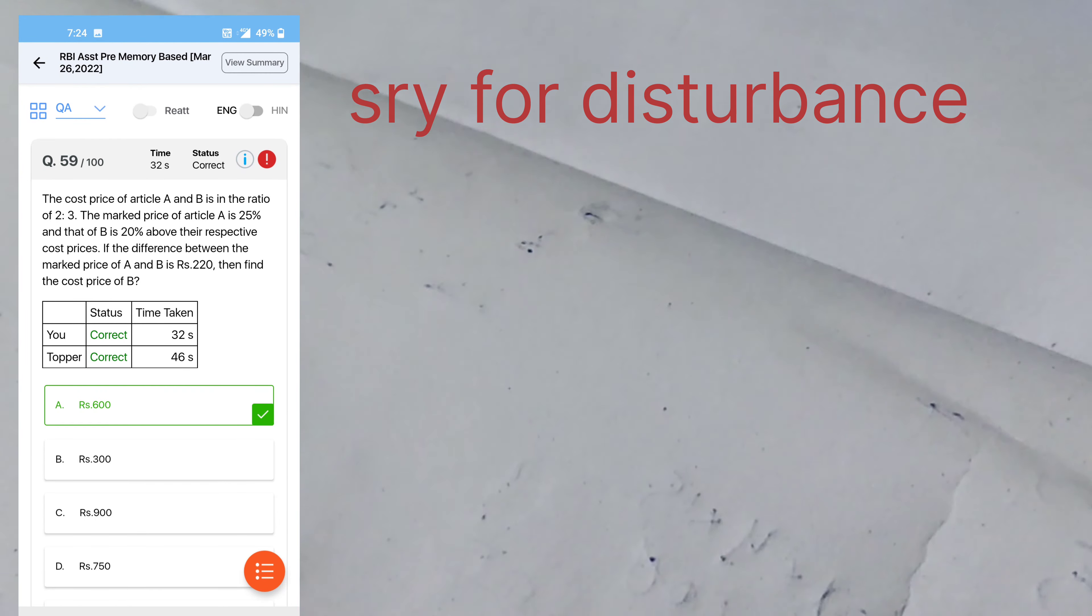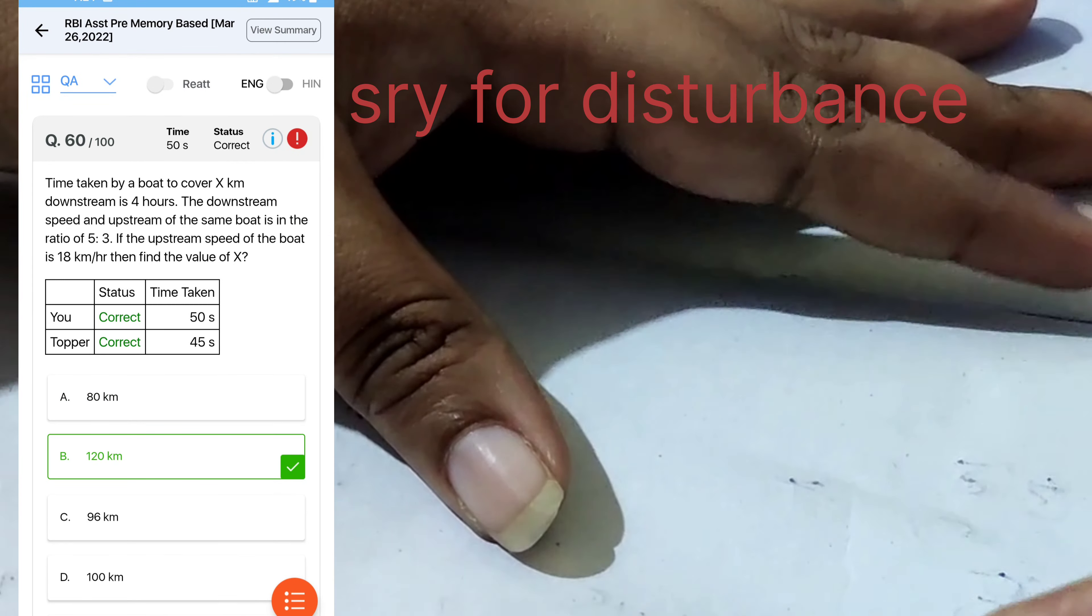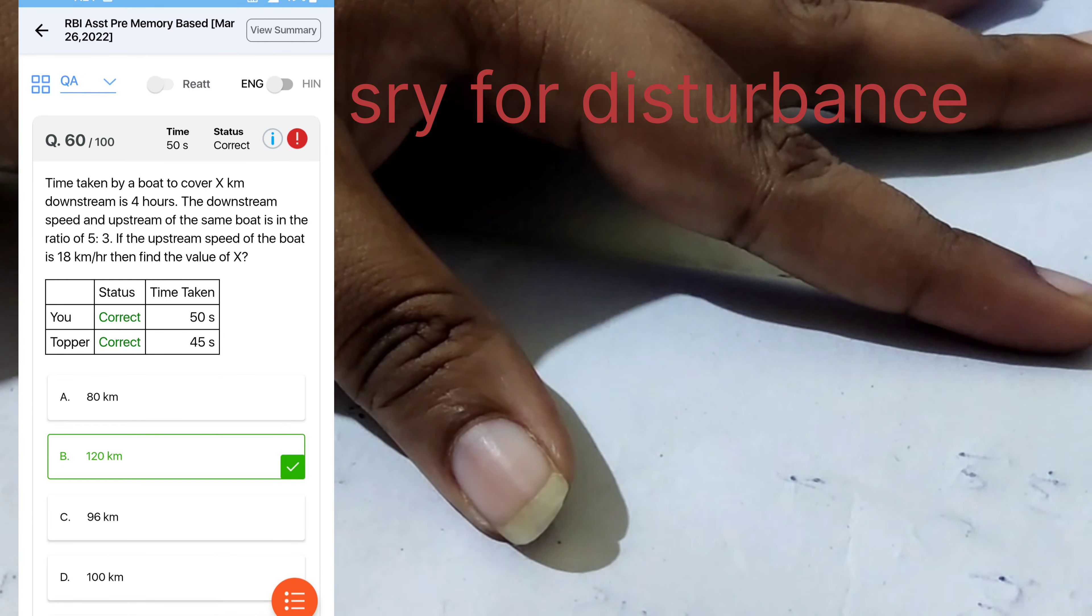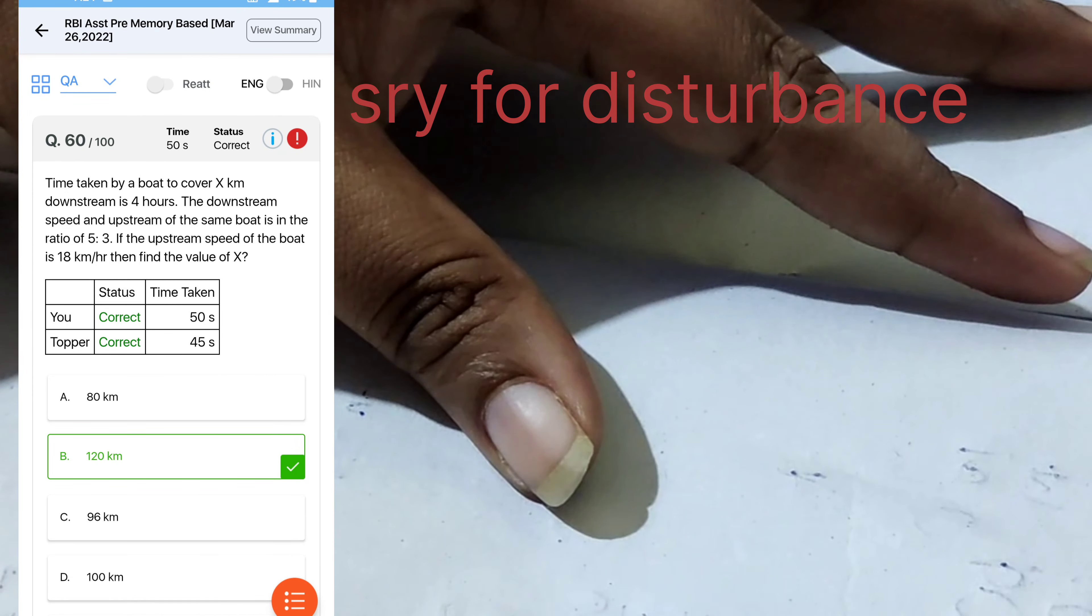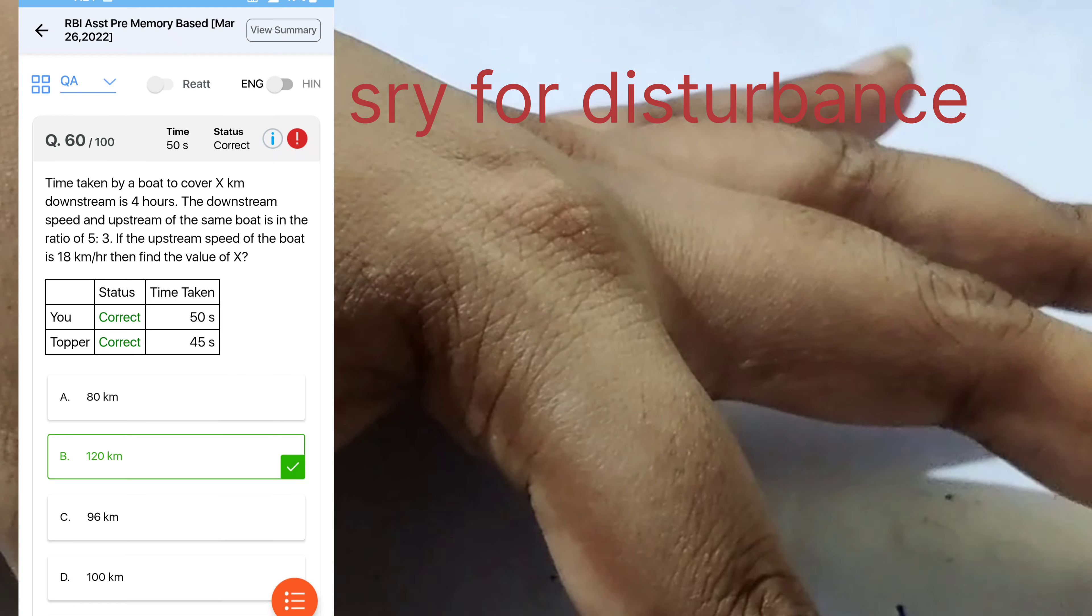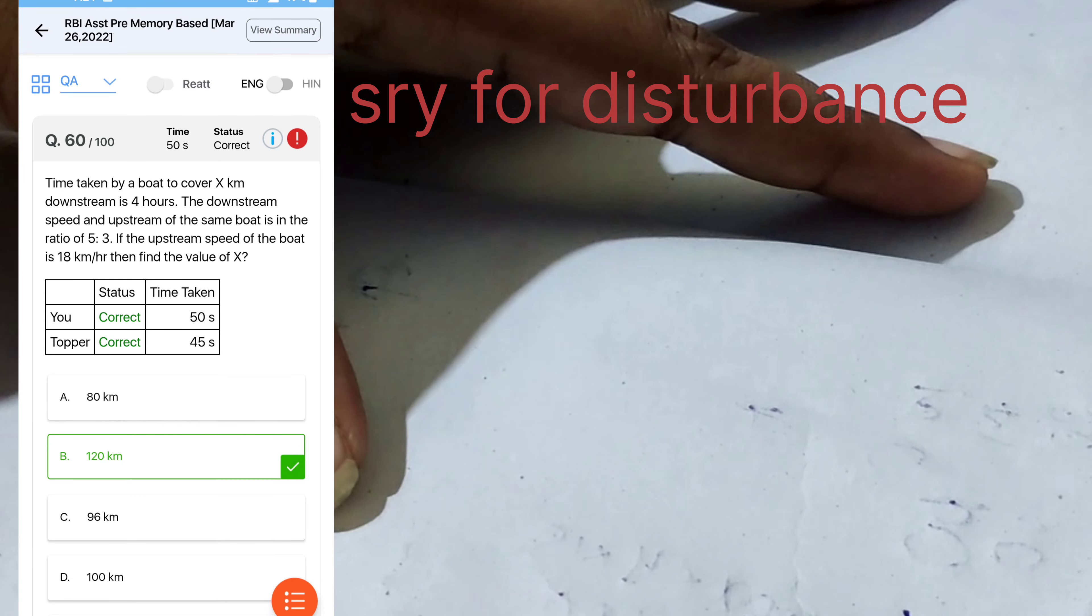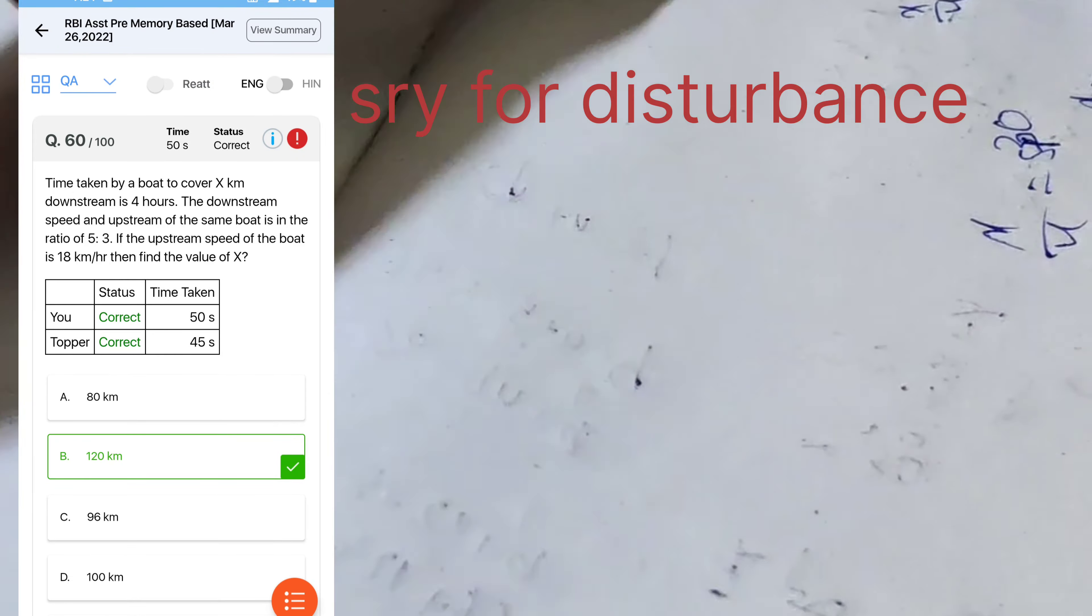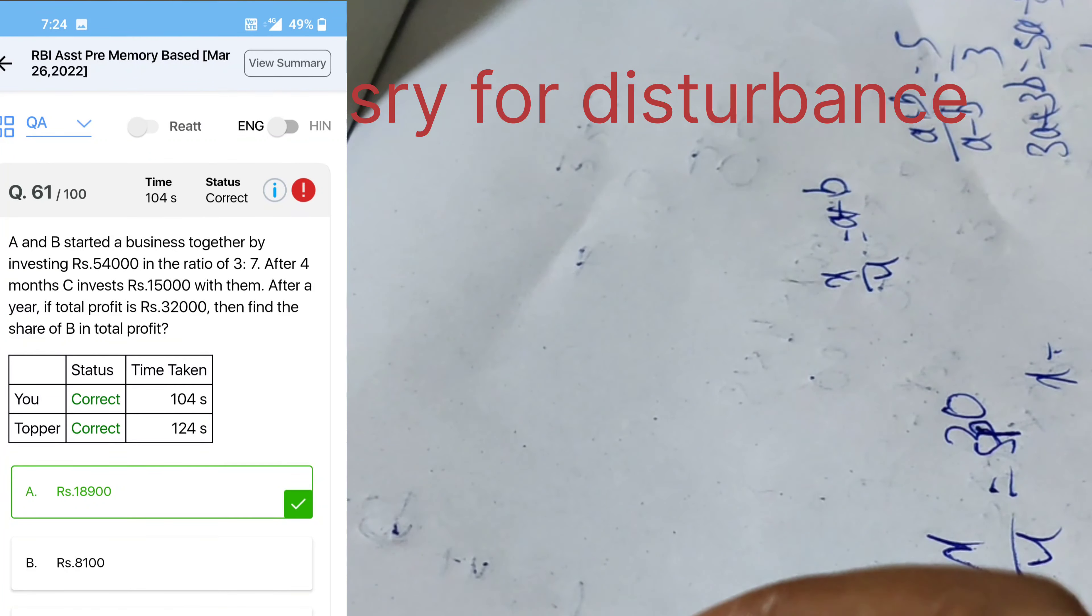Next question, the time taken by the boat to cover x by 4 is a plus b and here downstream and upstream, 5 by 3. So 3a plus 3b, 5a minus 5b. So 2a plus 8b, a is to b ratio 4 is to 1. x by 4 equal to 5, x. So already x is given, so that way 5b. If the upstream of the boat, it means 3 is 18. So h1 6, 24, 6. So 30, so x is 120. So this is a way of solving.